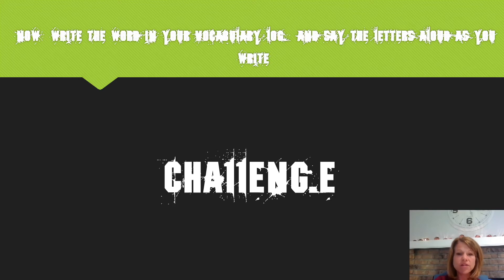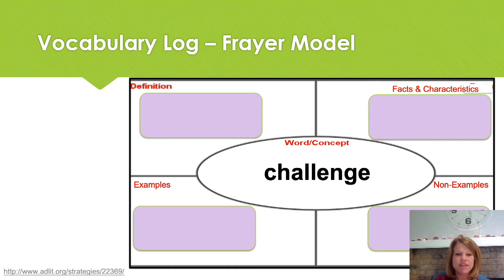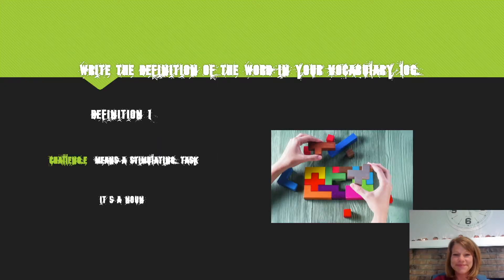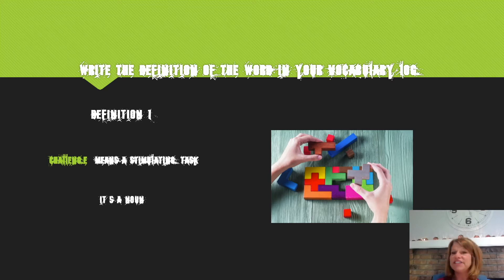For our Frayer model, we're going to write our term in the middle of our graphic organizer in the circle there that connects the four sections. You should have written the word challenge in the middle of your graphic organizer and it should look like mine. The next thing we need to do for our word work is to write the definition of the word in our vocabulary log. But remember for our Frayer model we want to put this definition in our own words.